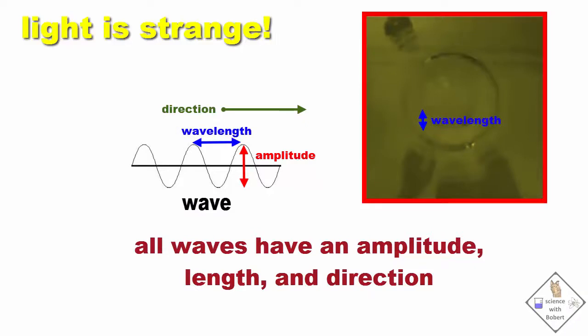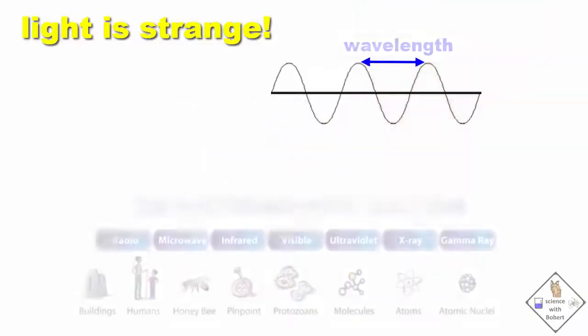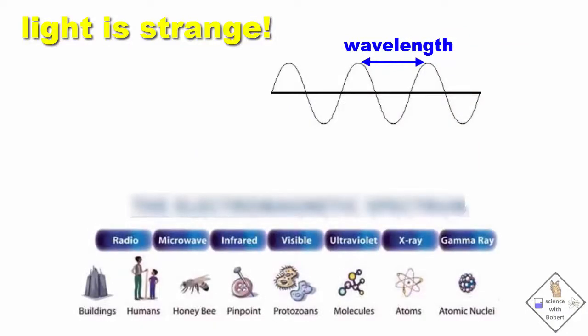It is the wavelength of light that determines the name of the region of light. Very long wavelengths of light on the order of the size of buildings down to our size, roughly six feet, are called radio waves.